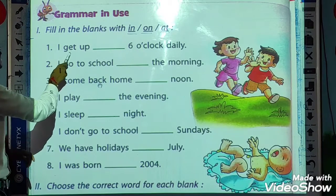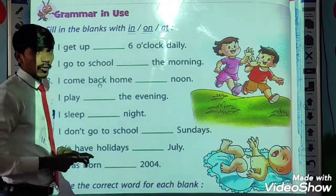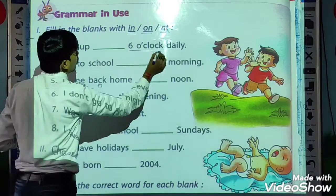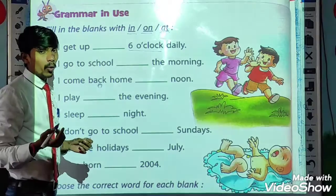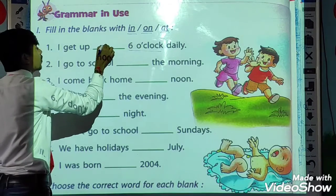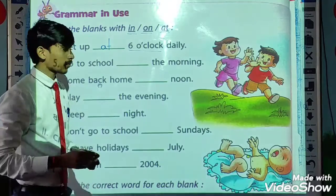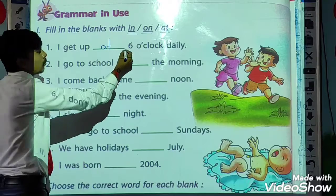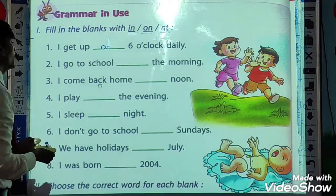So first sentence: I get up dash six o'clock daily. Now when we talk about time, what do we use? We use 'at.' So I get up at six o'clock daily. Because we are talking about time, so it will be 'at.'